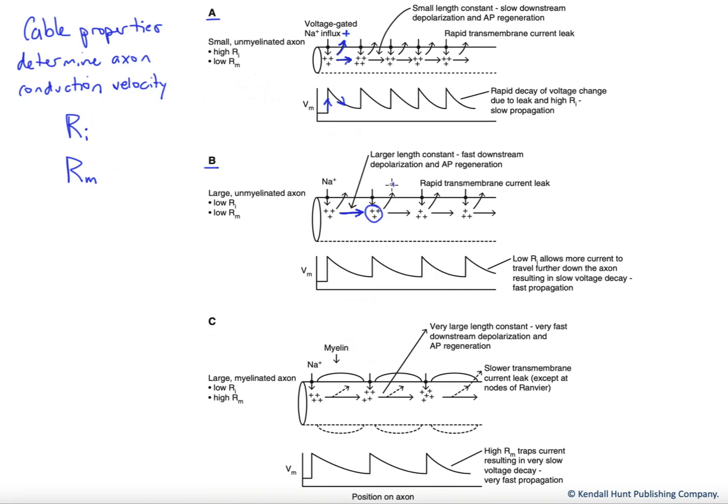It'll still wane, because we still have some leak here. Our resistance of our membrane is still relatively low, we still have a good bit of leak there. But the resistance inside went down, which means our current flow is better along the length of the axon, increasing our propagation velocity.